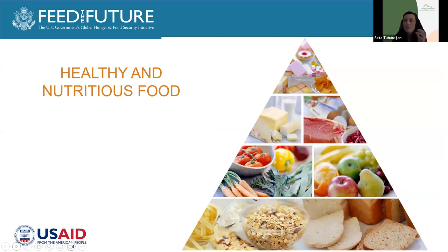The fourth pillar of the circular food economy is healthy and nutritious food. As we're designing for a circular food system — in the food waste, in the packaging, in the sourcing — we always need to remember that we want at the end of the day to provide healthy and nutritious food to people that meets their daily energy and nutrient requirements. We should never forget our healthy food pyramid in that process.